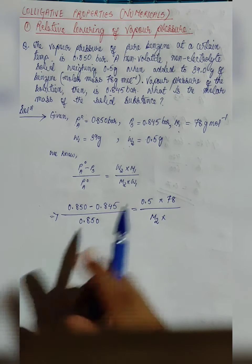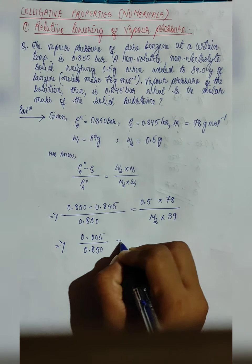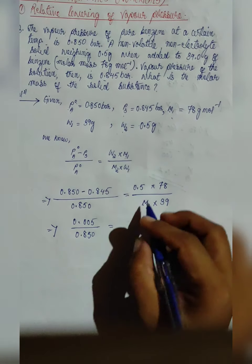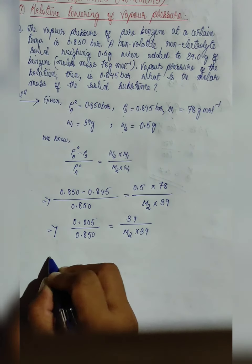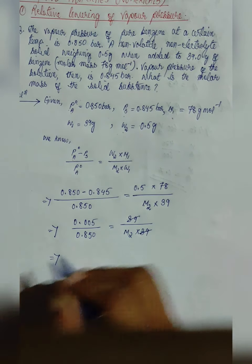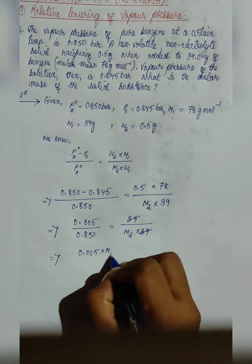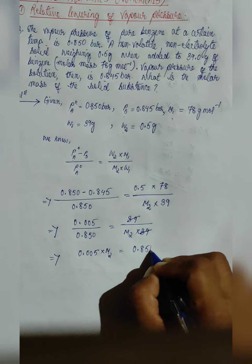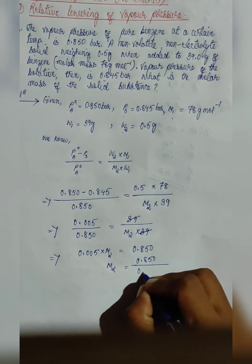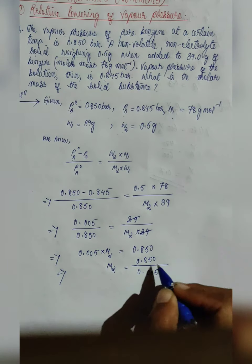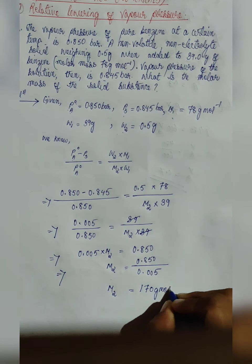Upon subtraction, we get 0.005 divided by 0.850. Upon multiplication, the 39 cancels. Upon cross multiplication, we get 0.005 into M2 equal to 0.850. So M2 can be written as 0.850 divided by 0.005. Upon division, you will get 170 gram per mole.